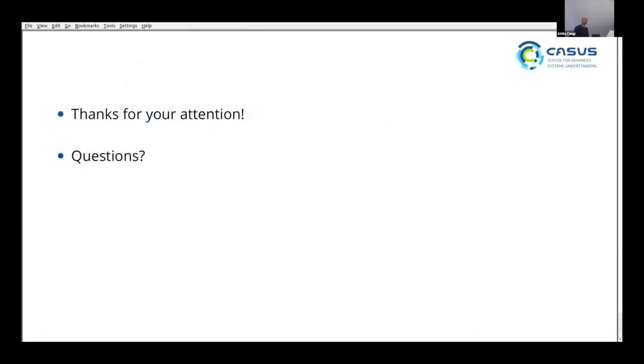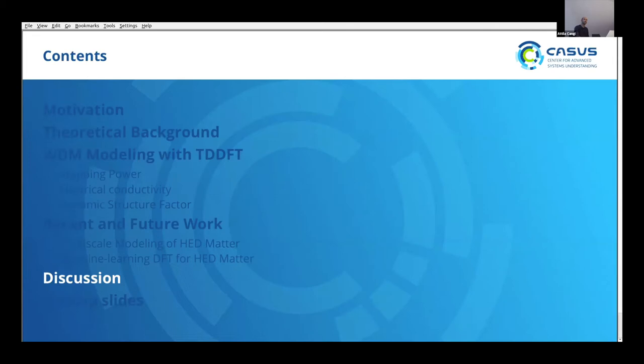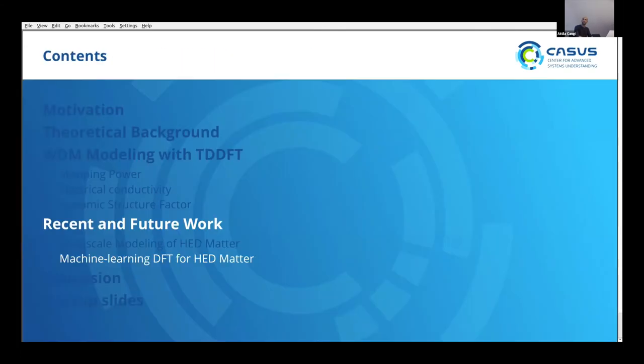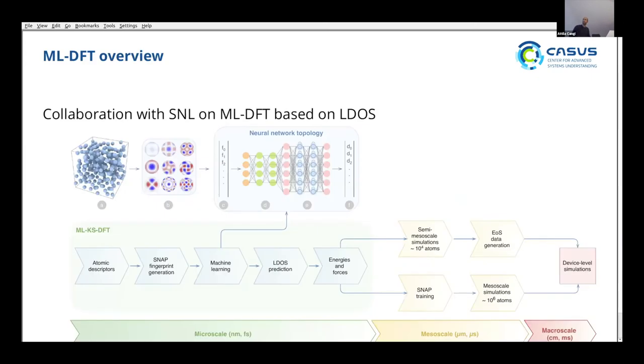So you mentioned some approaches towards ab initio simulations in the beginning and you already presented some way to go multi-scale. Are there other approaches, other methods to go multi-scale? Yes, so if I go here, maybe, so there are two principal paths to multi-scale.